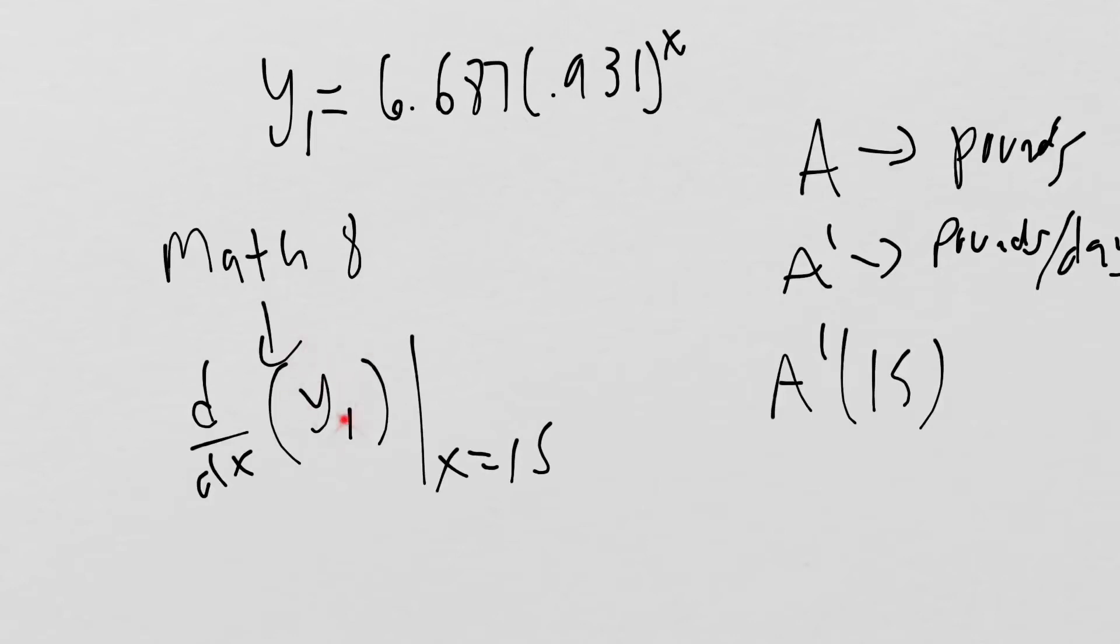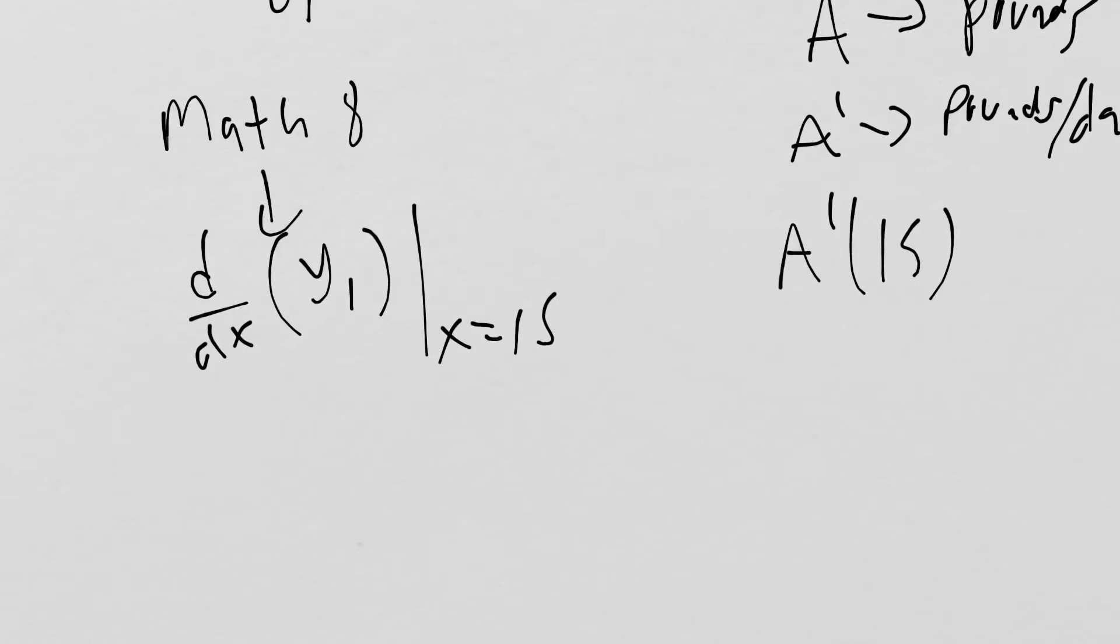Alternatively, if you don't have it plugged in for Y1, you could also just plug the function directly in. Instead of Y1, you just type out the actual function here. That should give us -0.164, and then we have to make sure we're doing pounds per day.